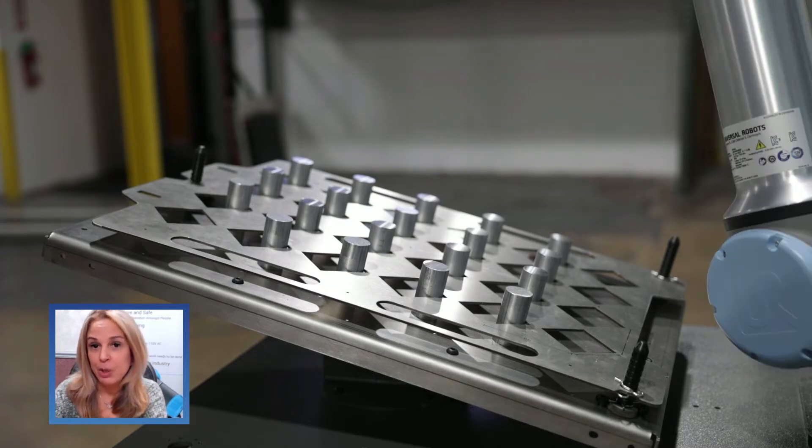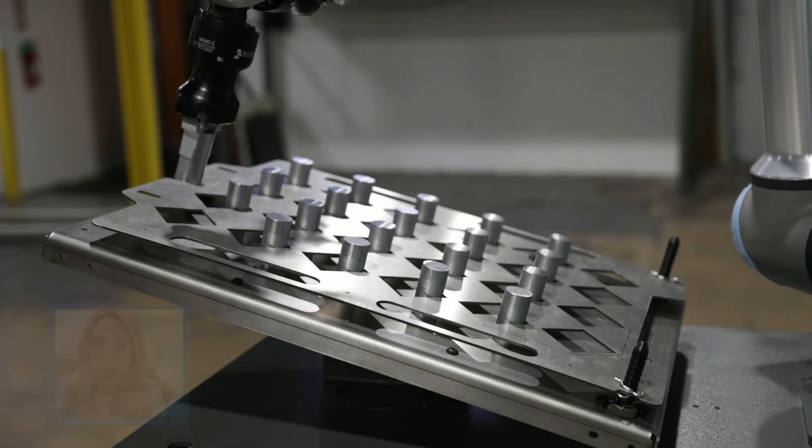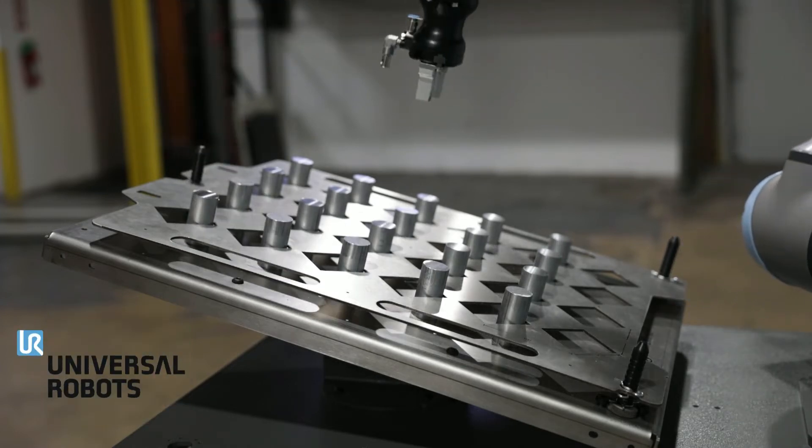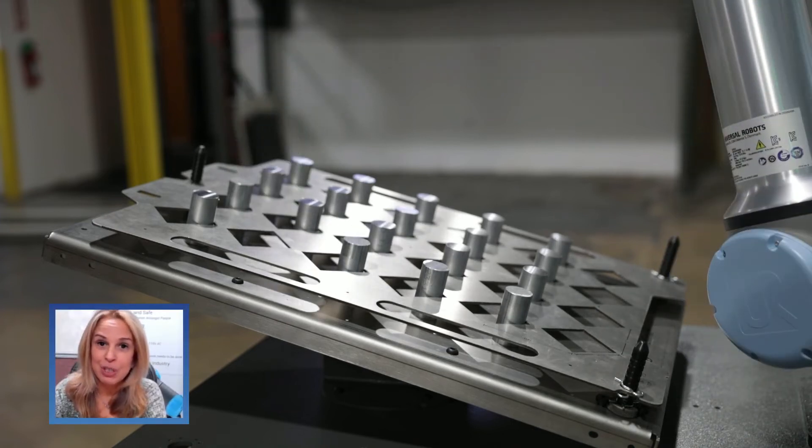Adding a machine tending UR robot to your production floor has so many benefits. It helps you to do more with less. It can save on labor costs and even fill in gaps when you have labor shortages.